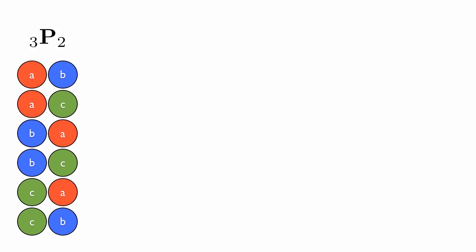In the second case, 3P2 means you start from three objects and you pick two of them and the order matters. In other words, ab and ba both count and we count them twice. So we have ab, ac, ba, bc, ca, and cb. Therefore, 3P2 equals six.